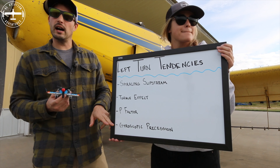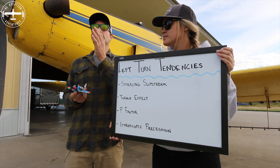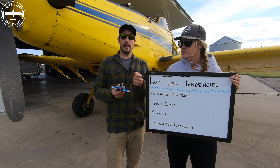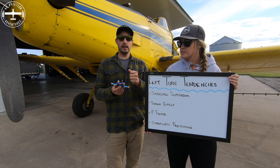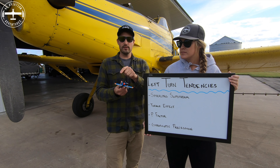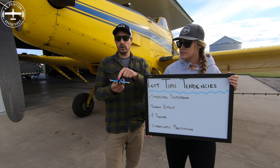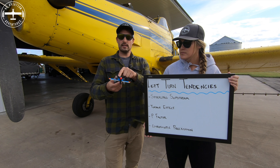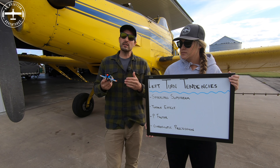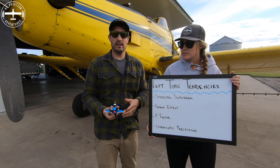The last one is gyroscopic precession. This really has to do more with my takeoff roll. I push the stick forward and what happens is I apply a force in one area. However, it's felt 90 degrees ahead of the rotation that the force was applied. What that translates to is the airplane again wanting to yaw to the left. However, this is really felt more on the ground than it is in the air.